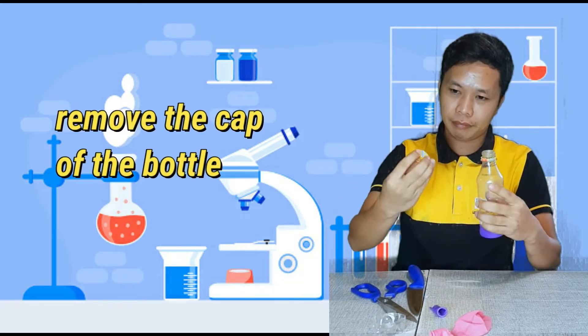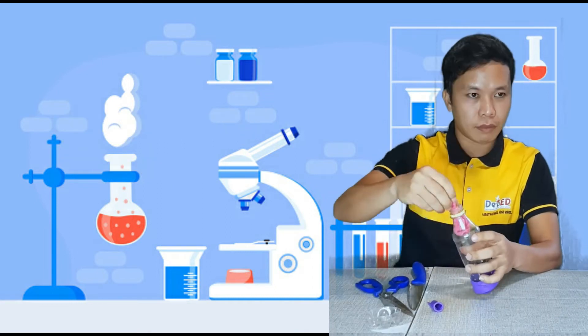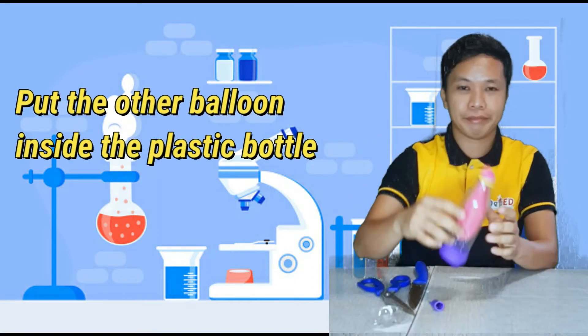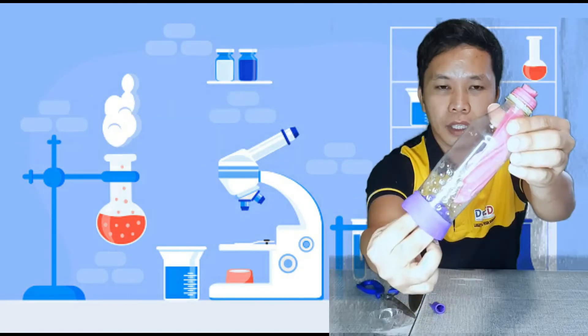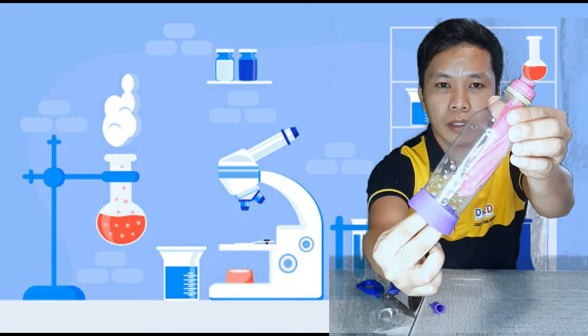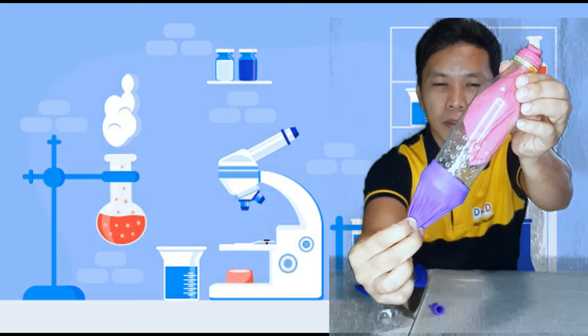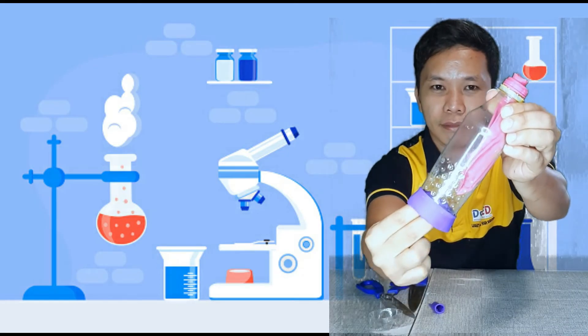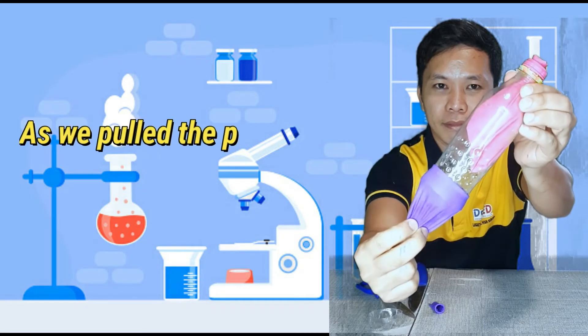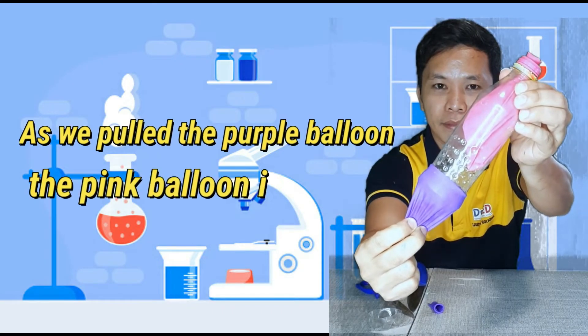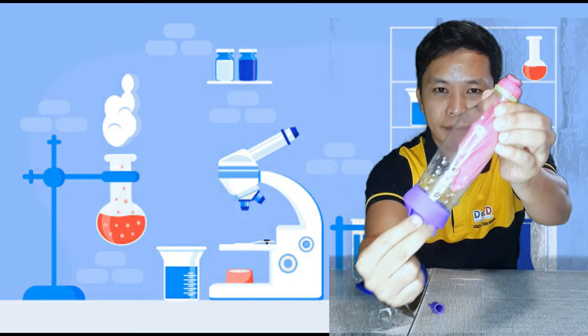Then, remove the cap of the bottle and put the other balloon inside the plastic bottle. So, we're done. Let us now observe what will happen to the balloon inside the plastic bottle. As we pull the balloon at the bottom of the bottle, we have observed that the balloon on the top inflated and it deflates when we release the bottom.